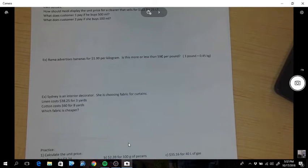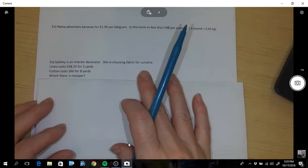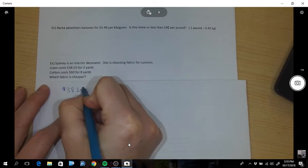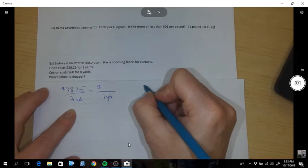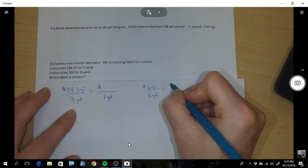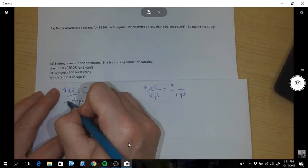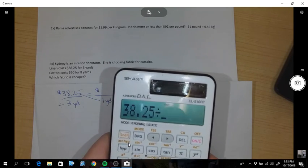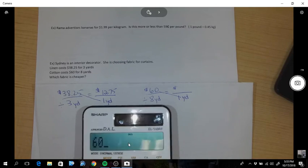Okay, last example. Sydney is an interior decorator. She is choosing fabric for curtains. Linens cost $38.25 for three yards, cotton $60 for eight yards. So which one is cheaper? So we're going to do unit price. I want to know the price per one yard of fabric. Same thing here: if it's $60 for 8 yards, I want to know the price for one yard. So once I have my ratio set up I multiply and divide. $38.25 divided by three is $12.75 per yard.